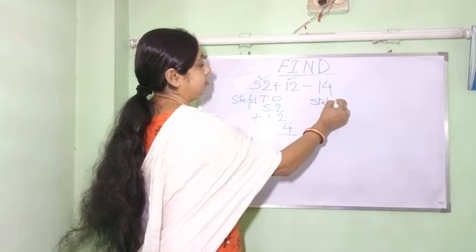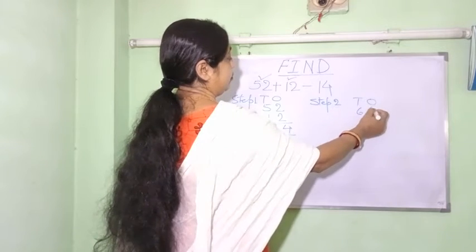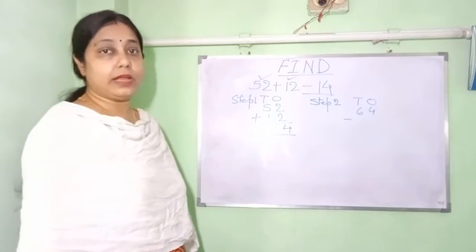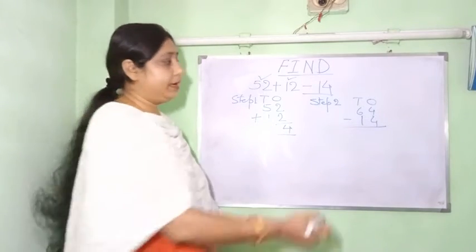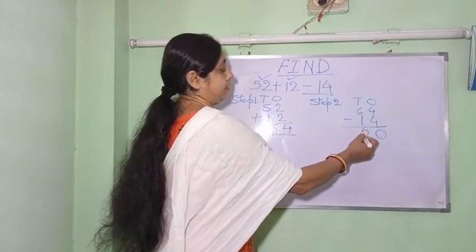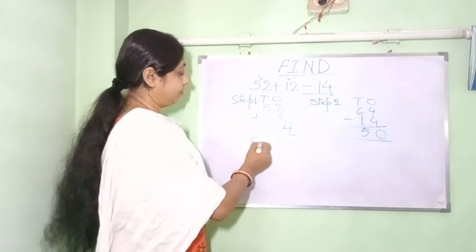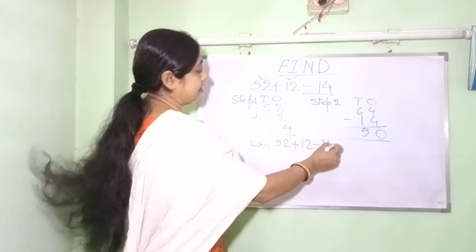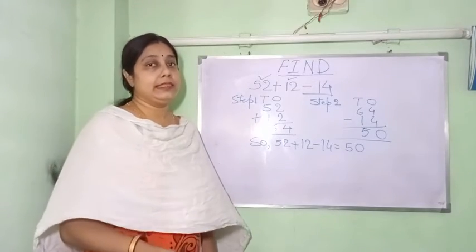In step 2, we carry forward 64 and write minus 14, which is left over. So 4 minus 4 is 0 and 6 minus 1 is 5 — the answer is 50. Below, copy the question: 52 plus 12 minus 14 equals 50.